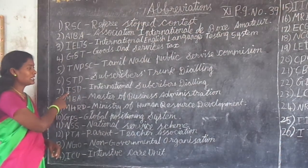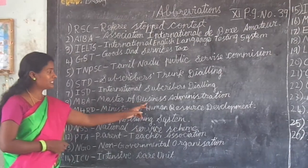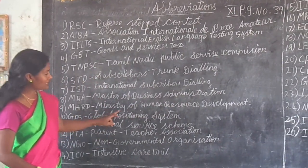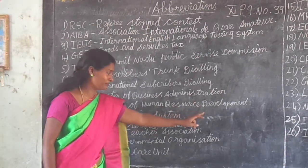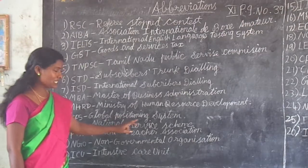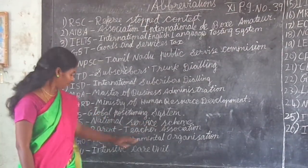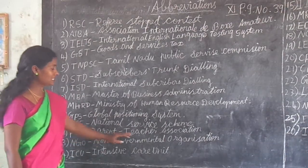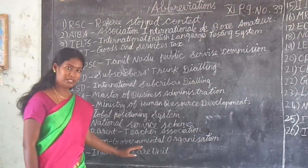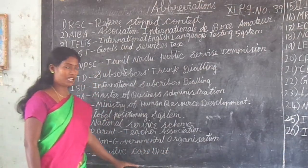ISD - International Subscriber Dialing. MBA - Master of Business Administration. MHRD - Ministry of Human Resource Development. GPS - Global Positioning System. NSS - National Service Scheme. PTA - Parent Teacher Association. NGO - Non-Governmental Organization. ICU - Intensive Care Unit.